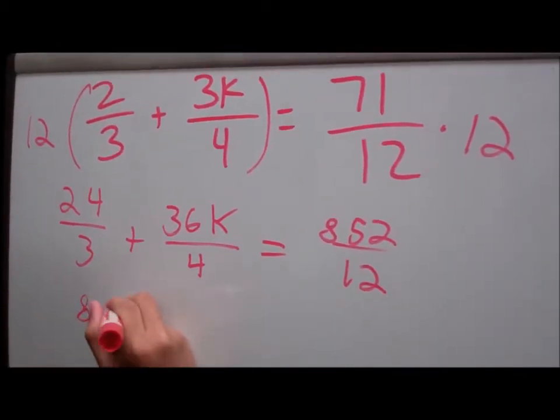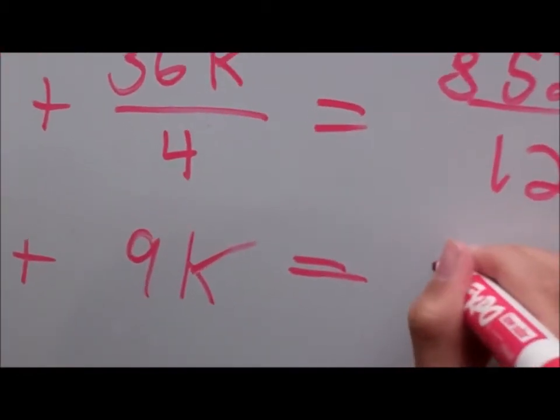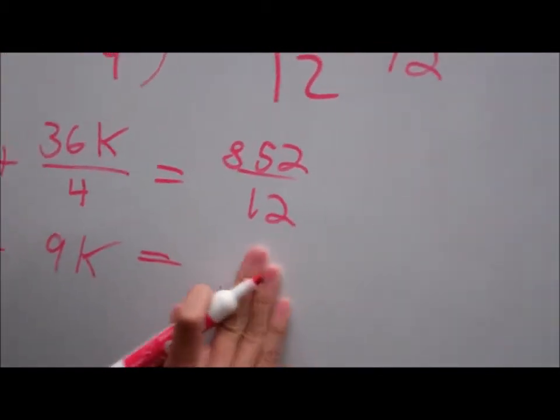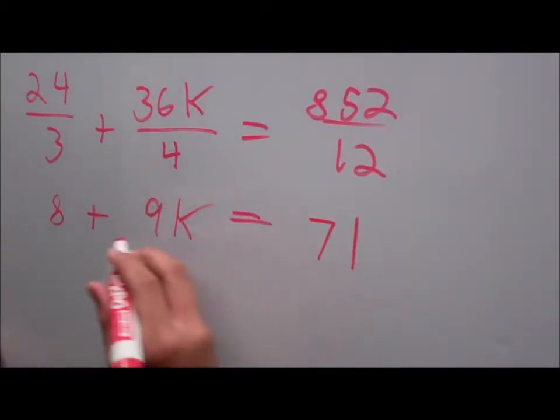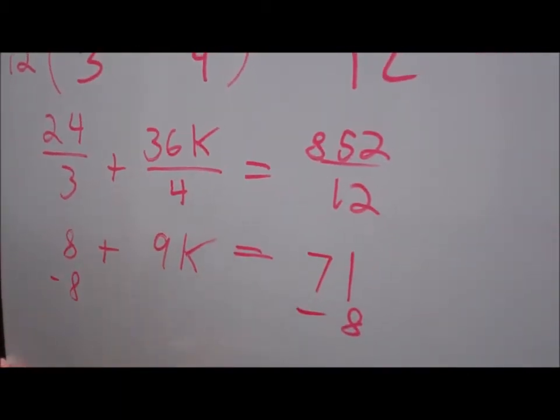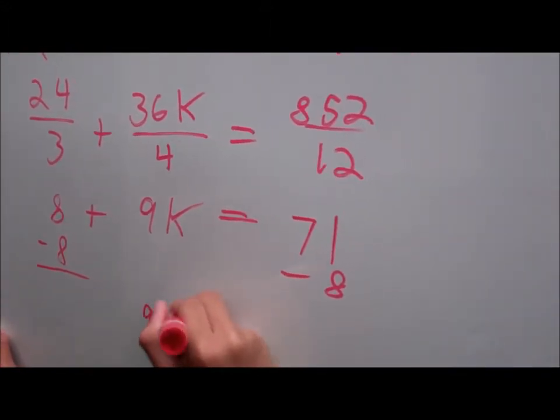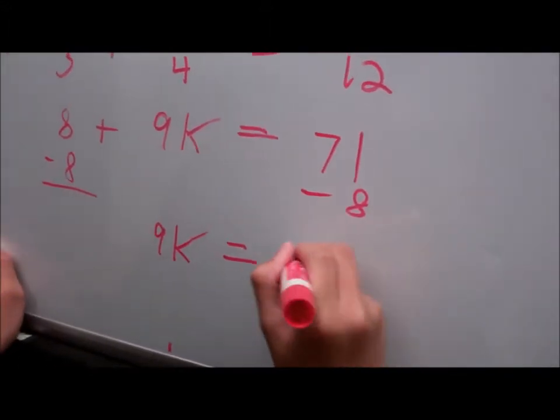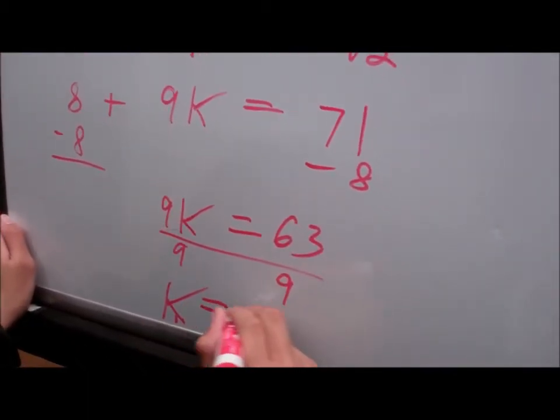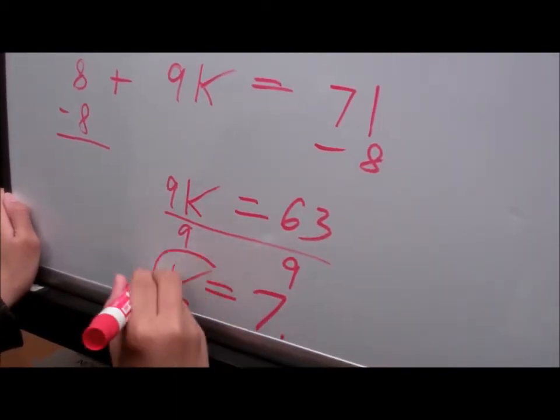So, 24 divided by 3 is 8, and 36k divided by 4 is 9k, and 852 divided by 12 is 71. Now he's going to subtract 8 from both sides. Now he's going to bring down 9k and divide 63 by 9. And the answer is k equals 7.